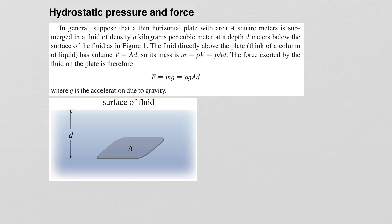We know that the force exerted is mass times acceleration due to gravity. Since mass is rho times area times depth, we substitute that in and get: Force equals the density of the fluid multiplied by acceleration due to gravity, multiplied by the area of the shape, multiplied by the depth at which the shape lies.